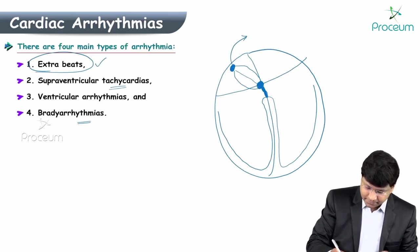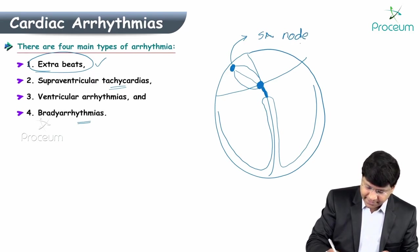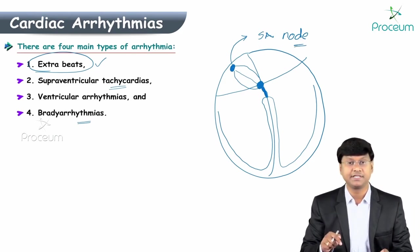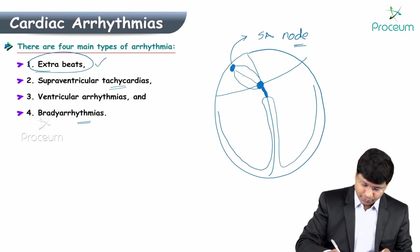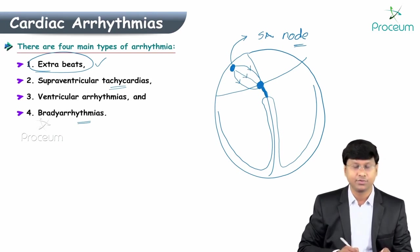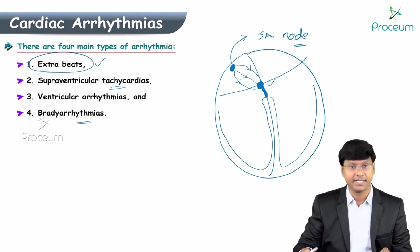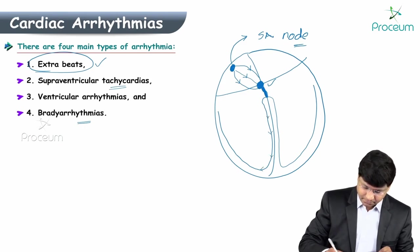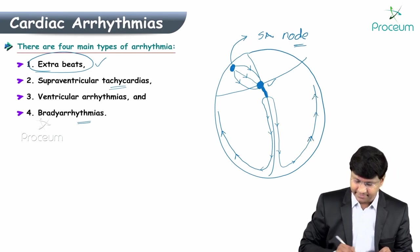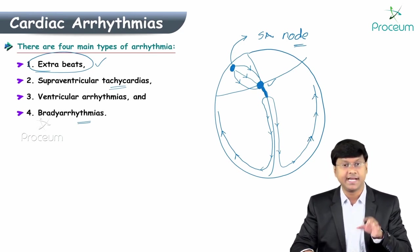The SA node is considered the pacemaker of the heart. The impulses originate from the SA node and move through the internodal fibers to the AV node, then to the bundle of His, and then to the right bundle branch and left bundle branch.